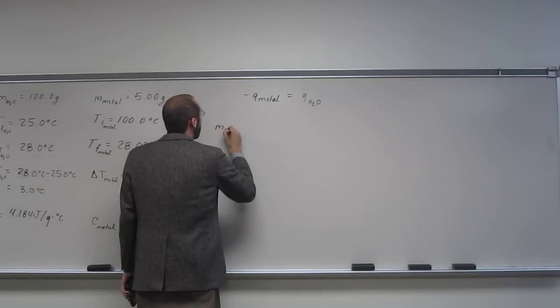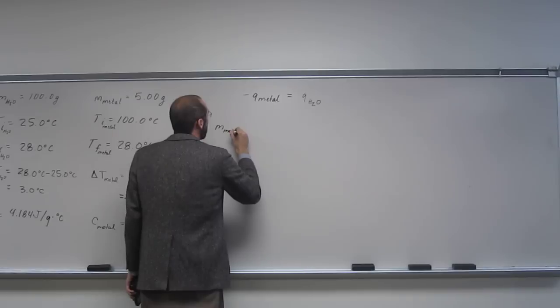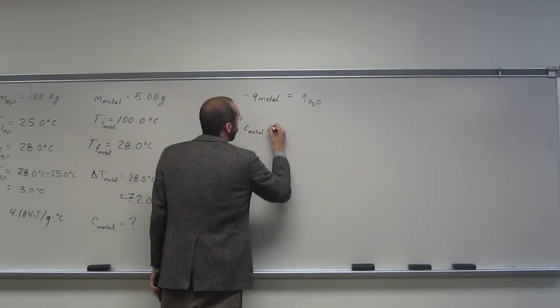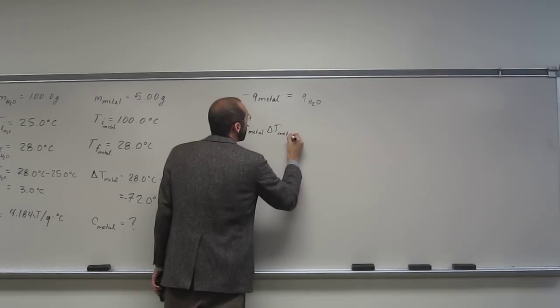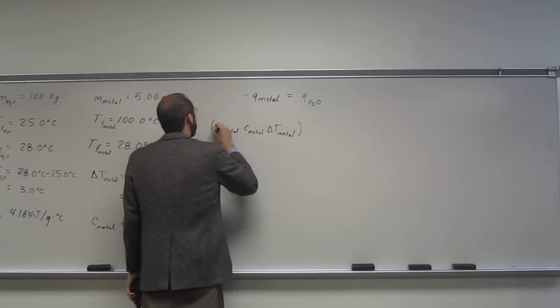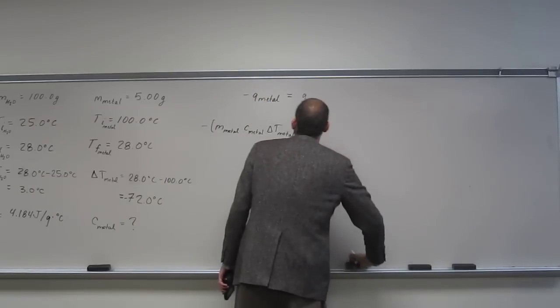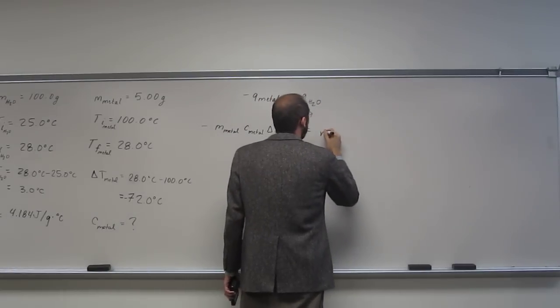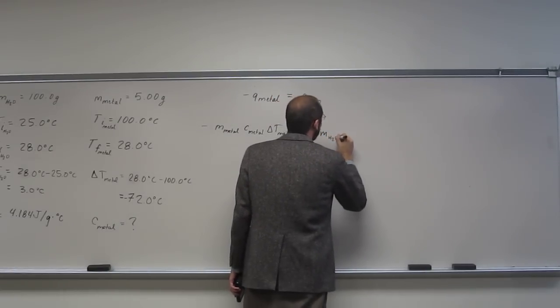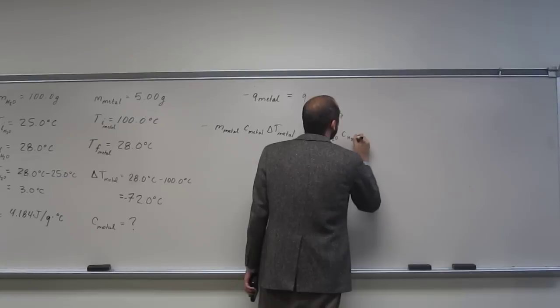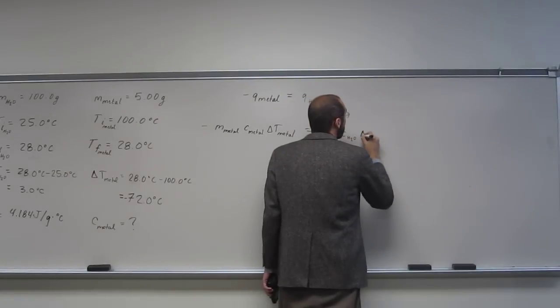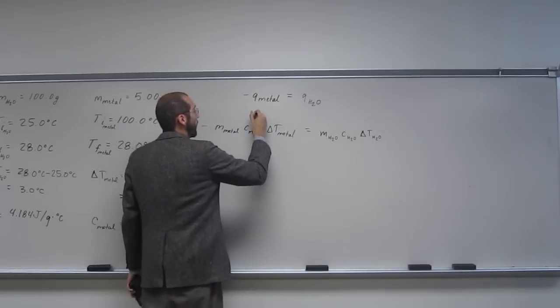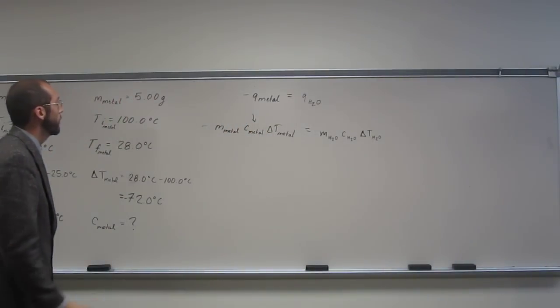So M of the metal, C of the metal, times delta T of the metal. In that case, if you want to do that, it's cool. So we're solving for that variable there.